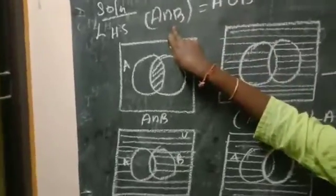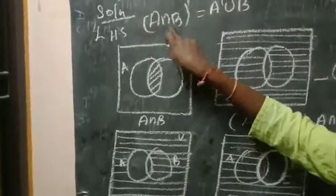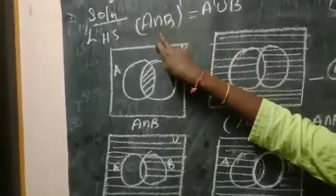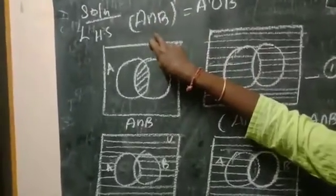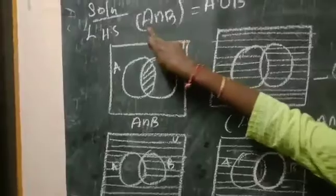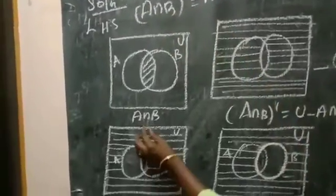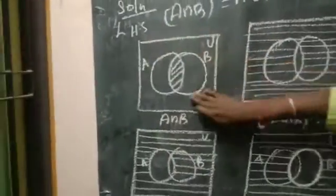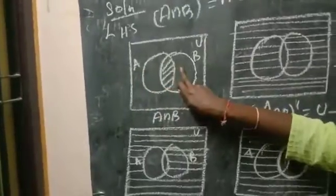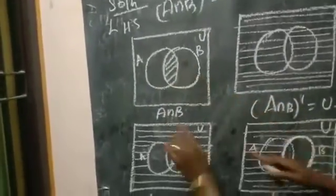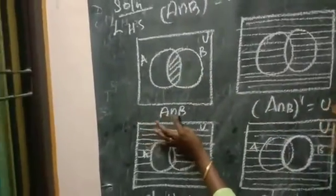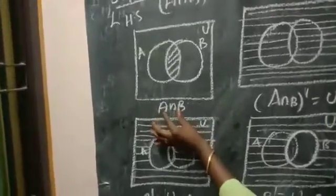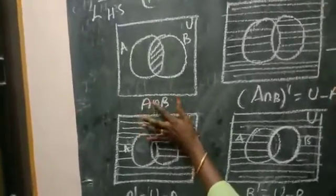Now we have to draw the LHS side: (A∩B)'. First we find out A∩B. This is the universal set. This is the A set and this is the B set. So now we draw A∩B. What is A∩B? It is the common space of set A and set B.